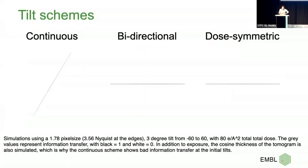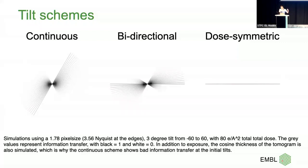That's where I started thinking about tilt schemes. The first historically was a continuous tilt scheme: start at high tilt and go to the other side. In cryo the problem is you first have to tilt up to that high tilt while tracking — tricky. Then people said: let's do bi-directional — start at zero, tilt one way, sweep back, do a realignment step, do the other side — which is where we saw the damage. So I asked: what if you use a dose-symmetric tilt scheme?